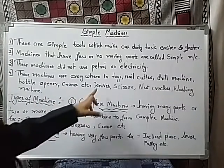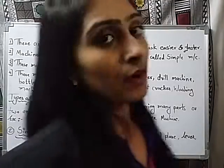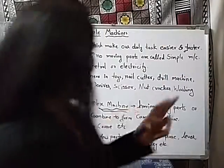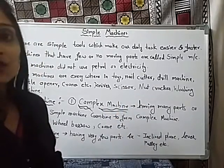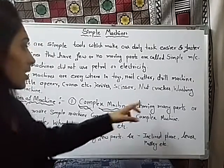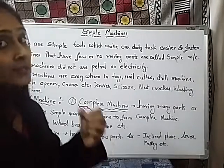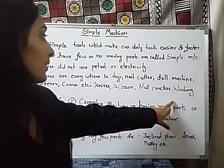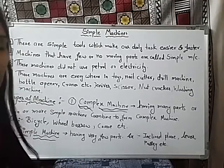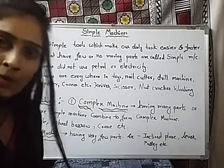A few simple machines, for example: a knife, which we generally use in our day to day work to cut vegetables and fruits. Second, scissors, which are generally used to cut papers and clothes. A nut cutter is used to cut hard nuts. Then the washing machine is simply used to wash clothes.